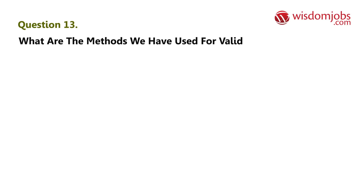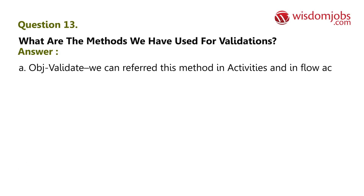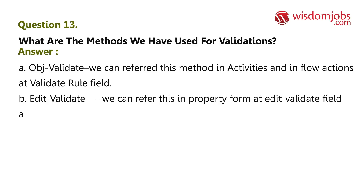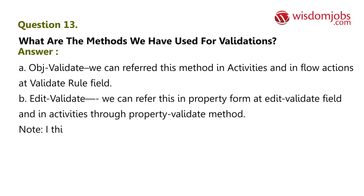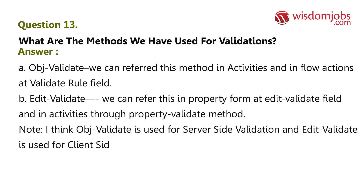Question 13: What are the methods used for validations? Answer: (a) obj-validate — can be referenced in activities and in flow actions at the validate rule field. (b) edit-validate — can be referenced in properties at the edit validate field and in activities through the property-validate method. Note: obj-validate is used for server-side validation and edit-validate is used for client-side validation.